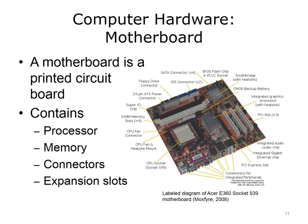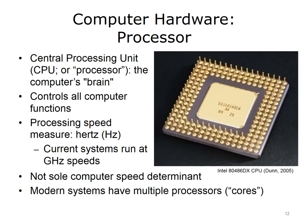The motherboard is the central printed circuit board of the computer. It contains the processor, memory, connectors, and expansion slots. We will discuss these components in detail next. The processor, or central processing unit, or CPU, is the brain of the computer. It controls all functions of the computer and performs all of the operations.